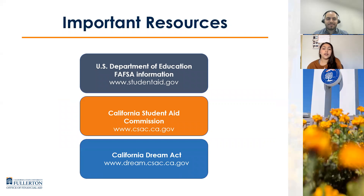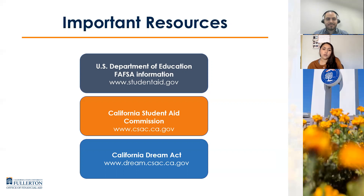Some other important resources for financial aid are the US Department of Education website, which has a lot of FAFSA information including how to apply, student loan details, federal Pell Grant info, and other federal aid. There's the California Student Aid Commission website for CDA filers or students with questions about Cal Grants, Middle Class Scholarships, or any state aid. And there's also the California Dream Act website for students to get more information on how to apply and what aid is available to them.